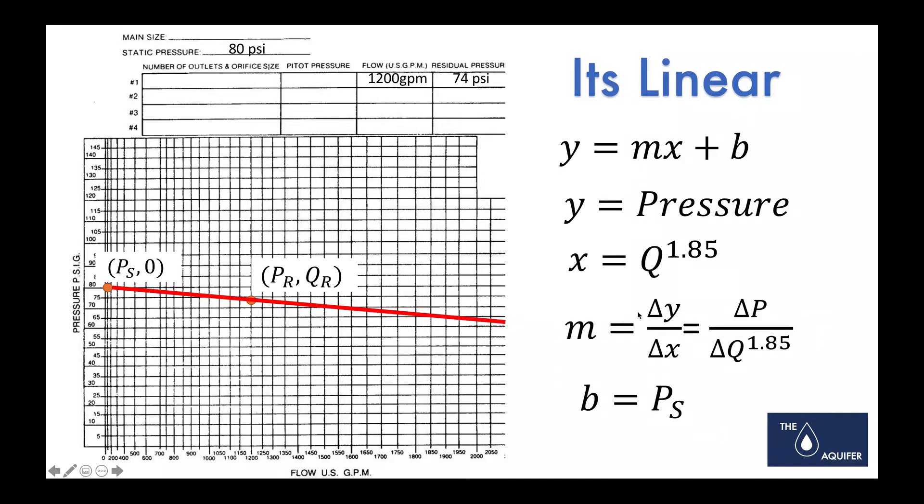And so the slope of your line is, like always, rise over run, X over Y. In this case, it's the change in pressure over the change in flow to the 1.85 power. And then your B, your Y intercept is static pressure, as you can see over here. So we've basically got our typical Y equals X plus B, sort of a negative slope. We have minus M, if you want to be technical, but we'll take care of that in the math.